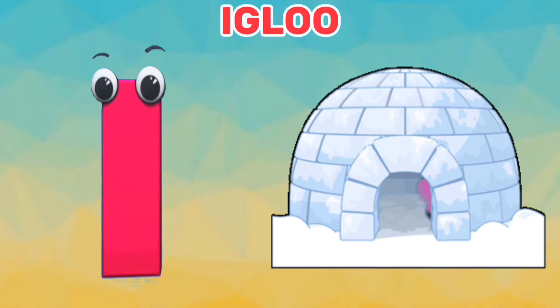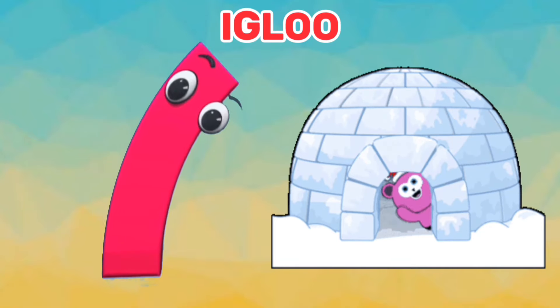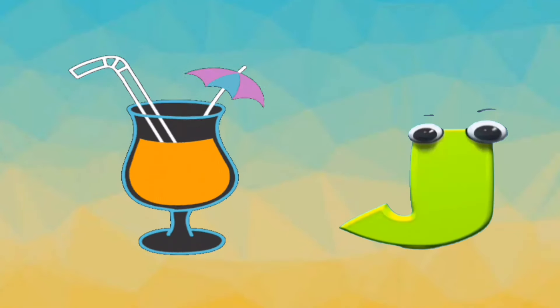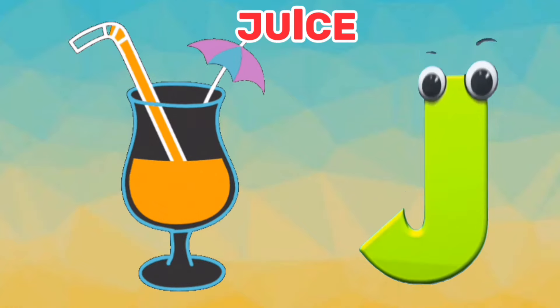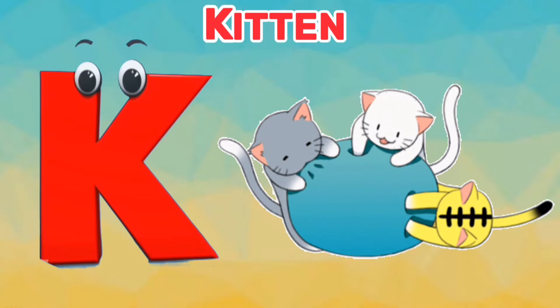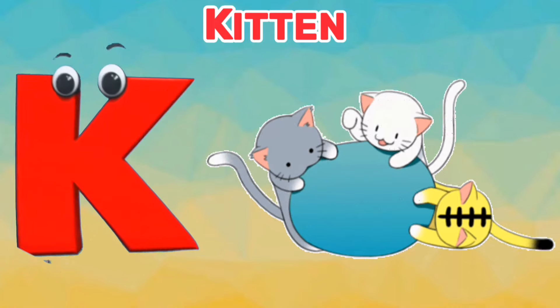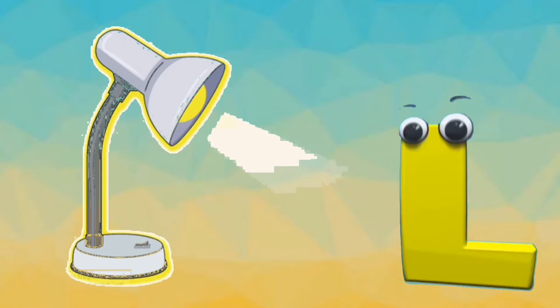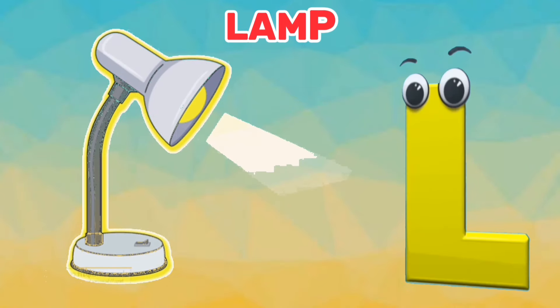I is for Igloo. I. Igloo. J is for Juice. J. Juice. K is for Kitten. K. Kitten. L is for Lamp. L. Lamp.